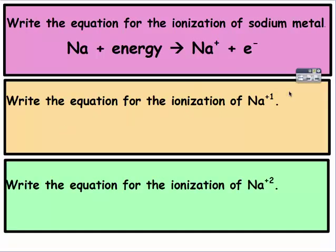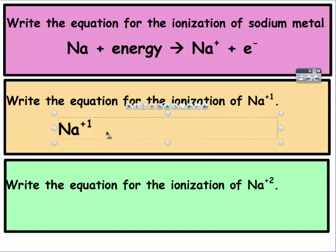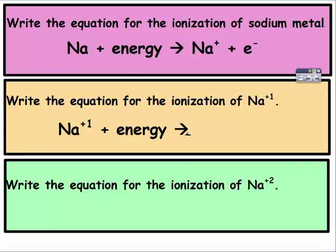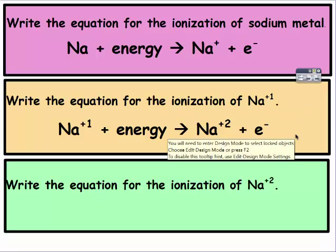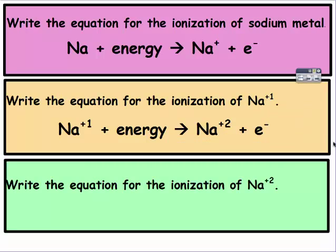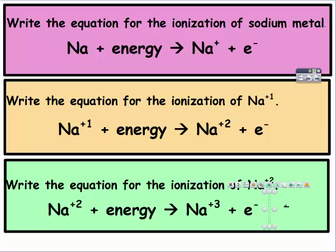To write the second ionization energy equation for Na⁺: start with Na⁺, it requires energy — more energy than before — and the charge becomes +2 because a second electron has been removed, plus a free electron. For the third ionization, Na²⁺ plus energy yields Na³⁺ and an electron.